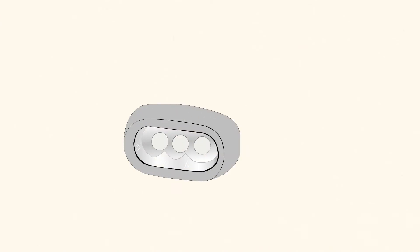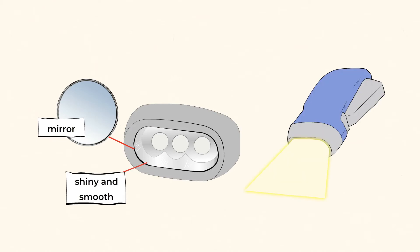Now this part of the flashlight is very shiny and smooth. Just like a mirror. So this must be used to reflect the light of the flashlight so that it's brighter. And now we're getting somewhere.